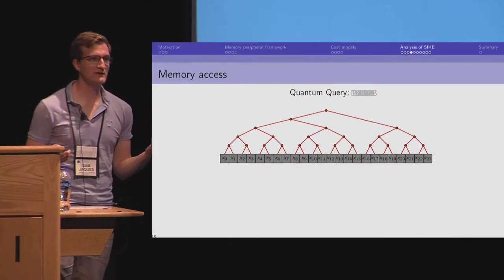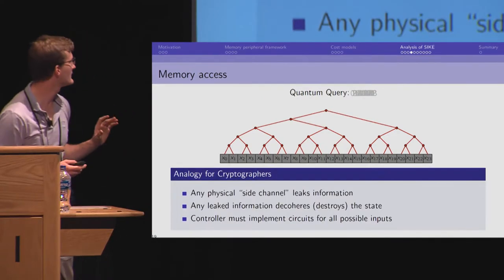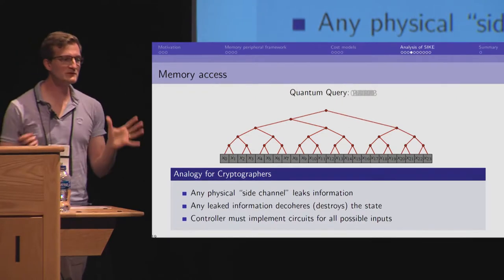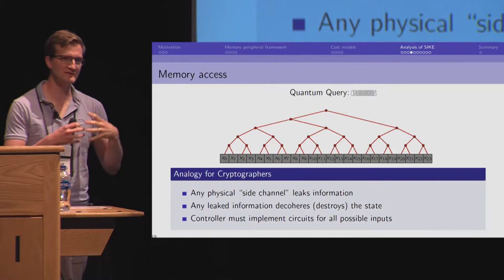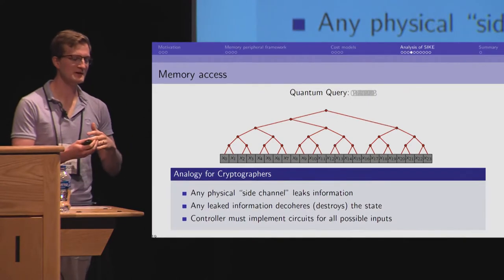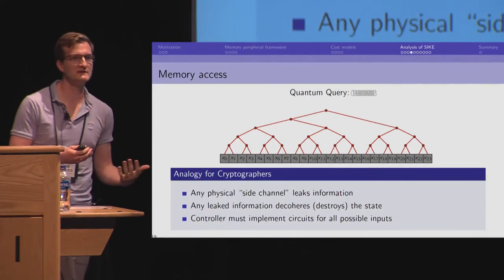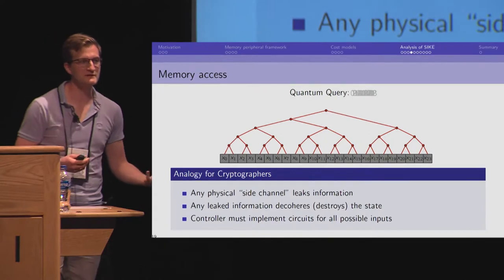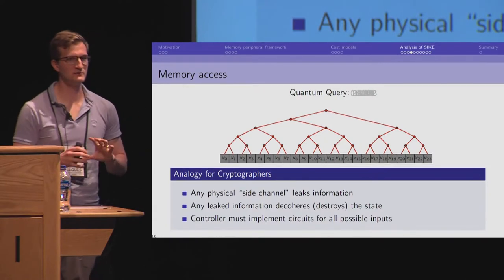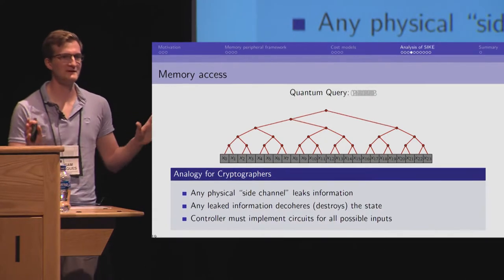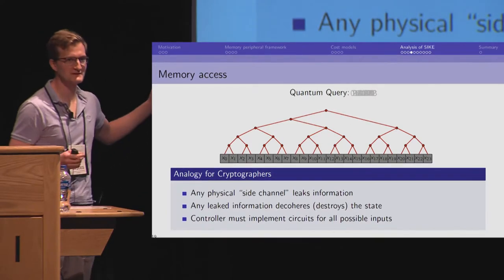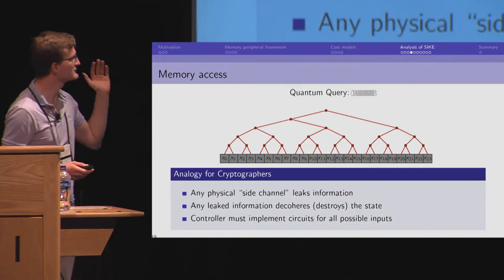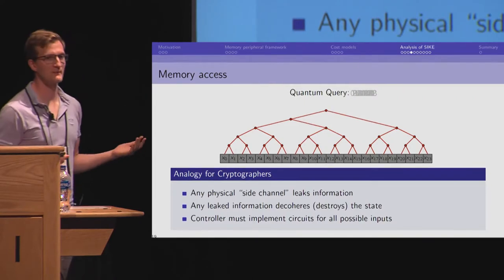And this should actually be very familiar to cryptographers because making a fairly loose analogy here, a quantum state kind of needs to be side channel resistant because if any information leaks about the state, that will decohere and destroy the state. So, the circuit that we use to operate on that state has to be sort of perfectly physically side channel resistant. And so, we need circuits like this one that work for all possible inputs.